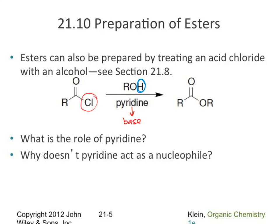Pyridine won't act as a nucleophile because it's sterically hindered. The nitrogen lone pair on the pyridine ring acts as the base, but the ring provides steric hindrance that blocks it from acting as a nucleophile. Our nitrogen becomes positively charged when it reacts with hydrogen, but the nice thing is we can take the hydrogen off just as easily as we put it on via acid-base chemistry.